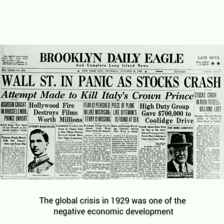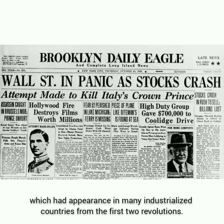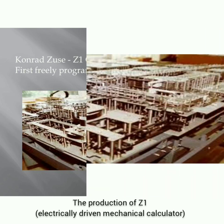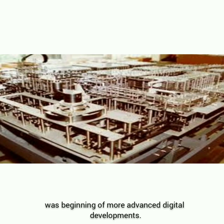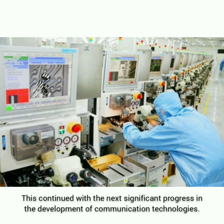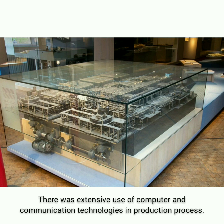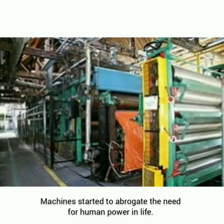The global crisis in 1929 was one of the negative economic developments which appeared in many industrialized countries from the first two revolutions. The production of the Z1 electrically driven mechanical calculator was the beginning of more advanced digital development. This continued with the next significant progress in communication technologies. There was extensive use of computer and communication technologies in the production process, as machines started to abrogate the need for human power.